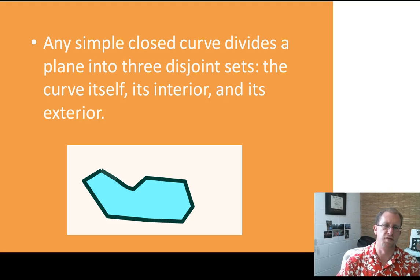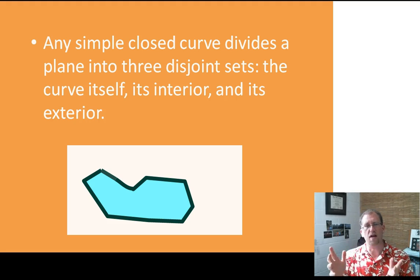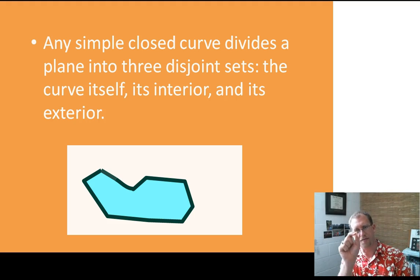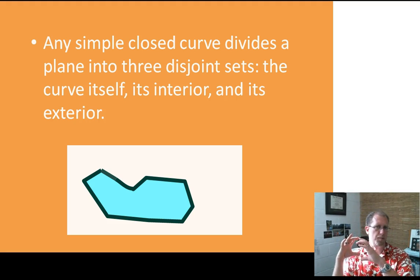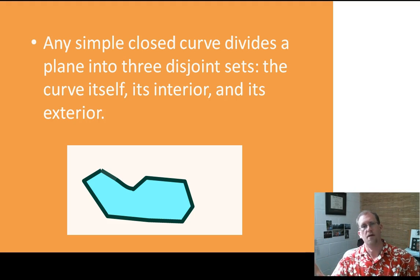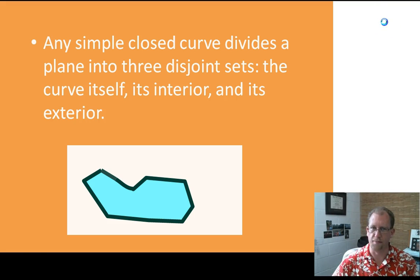Any simple closed curve divides a plane into three disjointed sets: the curve itself, its interior, and its exterior. We've done things like this before. We had to pull a point out of a line and say we have two half lines and this point. We pulled a line out of a plane and said we had two half planes and that line. Now, if I pull a simple closed curve out of a plane, I have the interior of the curve, the exterior of the curve, and the curve itself. So I've dissected the plane into three things. These are all concepts that you've had already.